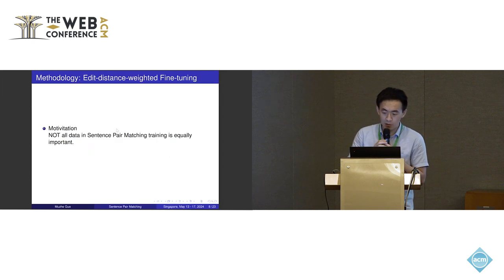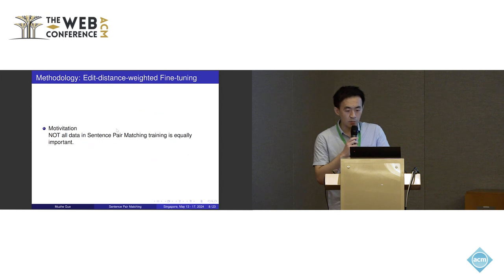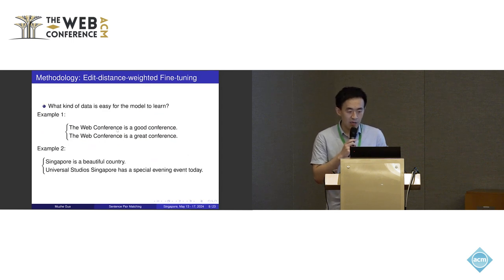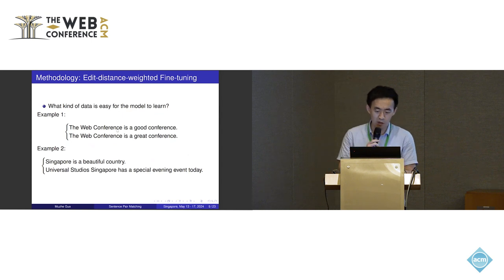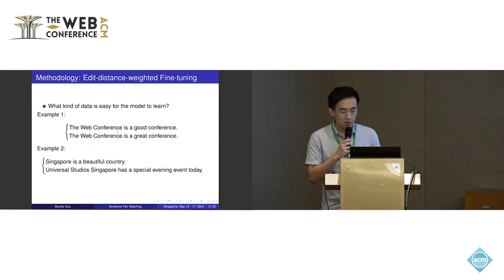The first one is edit distance weighted fine-tuning. The motivation is that not all data in sentence pair matching training is equally important. So what kind of data is easy for the model to learn? 'The web conference is a good conference. The web conference is a great conference.' These two sentences are very easy for the model to learn because there is only one different word in the two sentences.